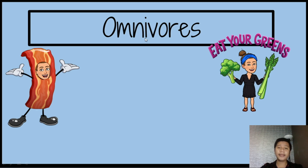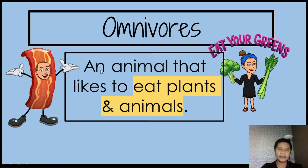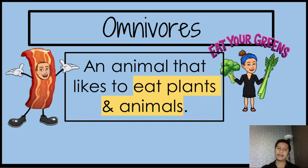The next classification is what we call omnivores. Can you spell omnivores? O-M-N-I-V-O-R-E-S — omnivores. So what is an omnivore? An omnivore is an animal that likes to eat both plants and animals.